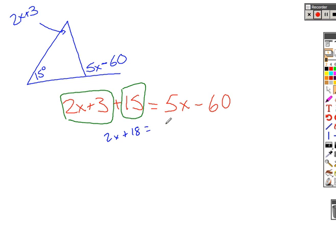2x, now this is 18, equals 5x minus 60. Just when we solve it, it would become 78 equals 3x. So you would get that x equals 26. Very straightforward.